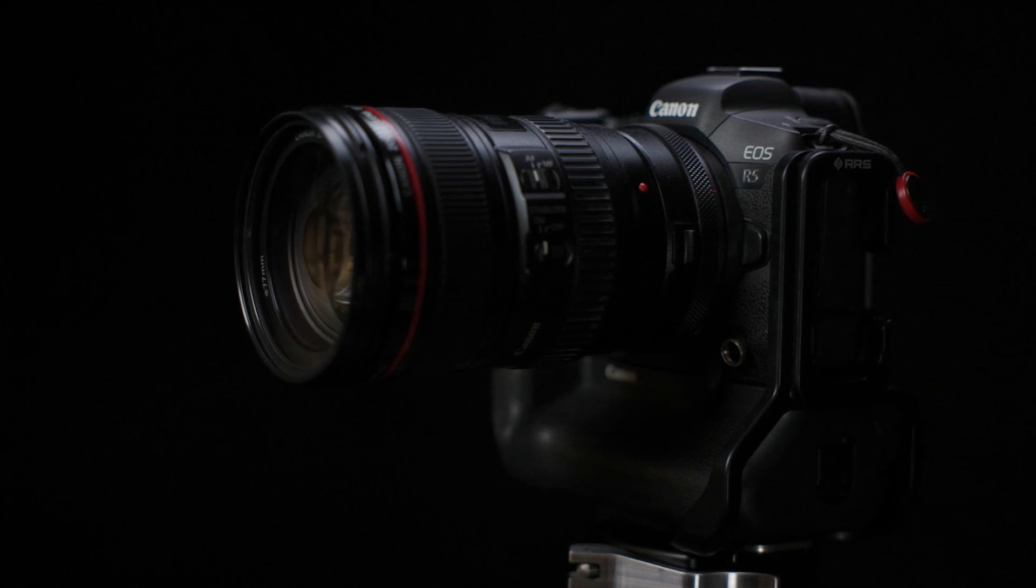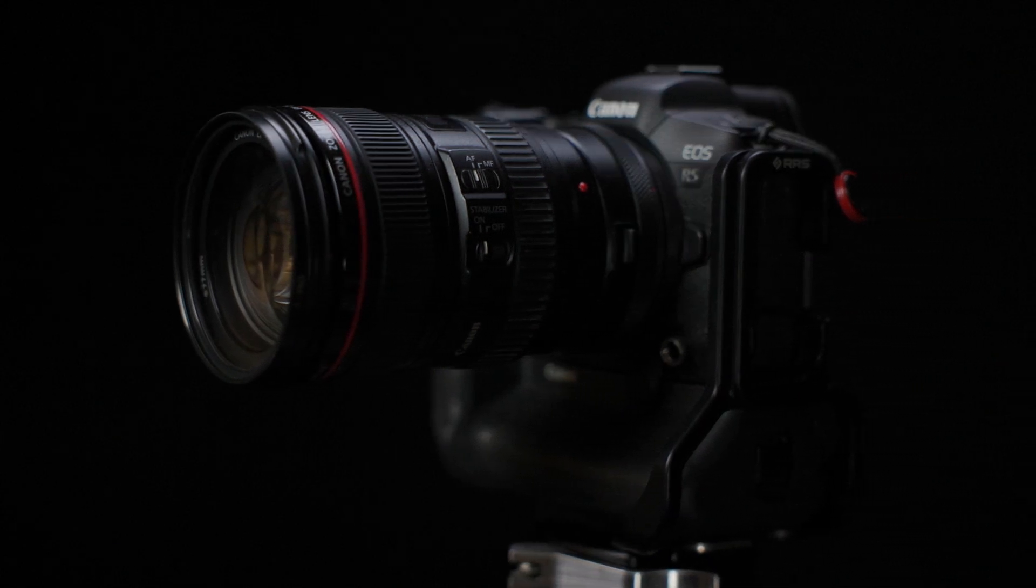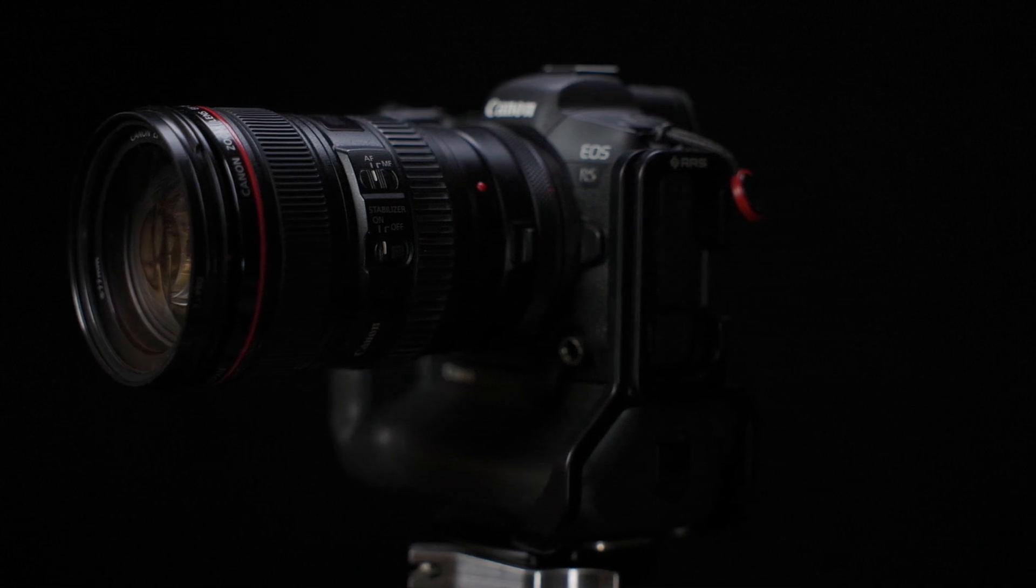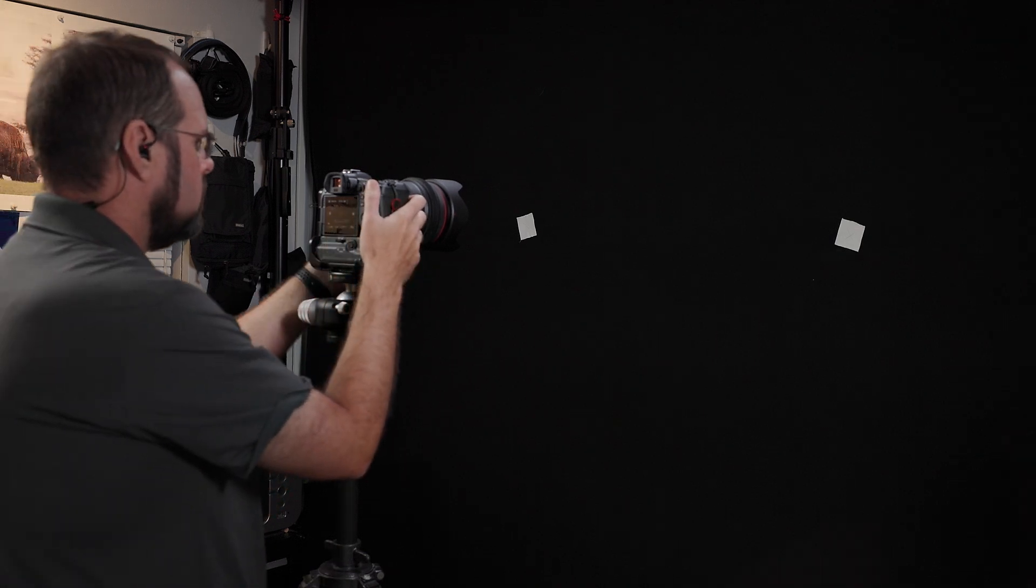Now Canon's EF 24-105mm f4L IS USM, the lens we're looking at here, was originally released back in 2005 in the EF mount for the EOS DSLR platform.